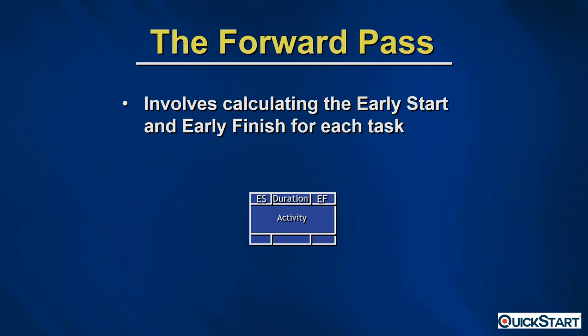With that in place, let's do a forward pass. In the critical path method, the forward pass involves calculating the early start and early finish dates for each task. The activity name goes in the center box, the duration in the upper middle quadrant, the early start on the upper left, and the early finish on the upper right quadrant.